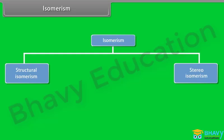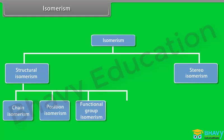Isomerism can be grouped into structural isomerism and stereo-isomerism. Structural isomerism can be subdivided into chain isomerism, position isomerism, functional isomerism, and meta-isomerism. Stereo-isomerism is further categorized into geometrical and optical isomerism.